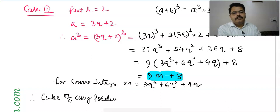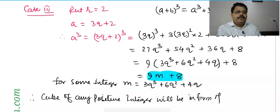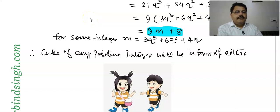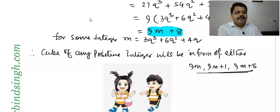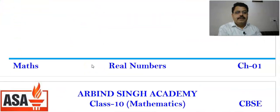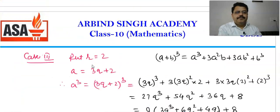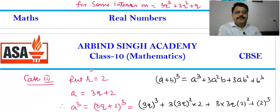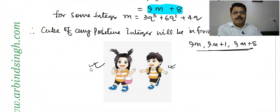Therefore, the cube of any positive integer is in the form of 9m, 9m + 1, or 9m + 8. This completes all the questions of this exercise. So all these are done. In the next class we will move ahead. You all practice these well. God bless!